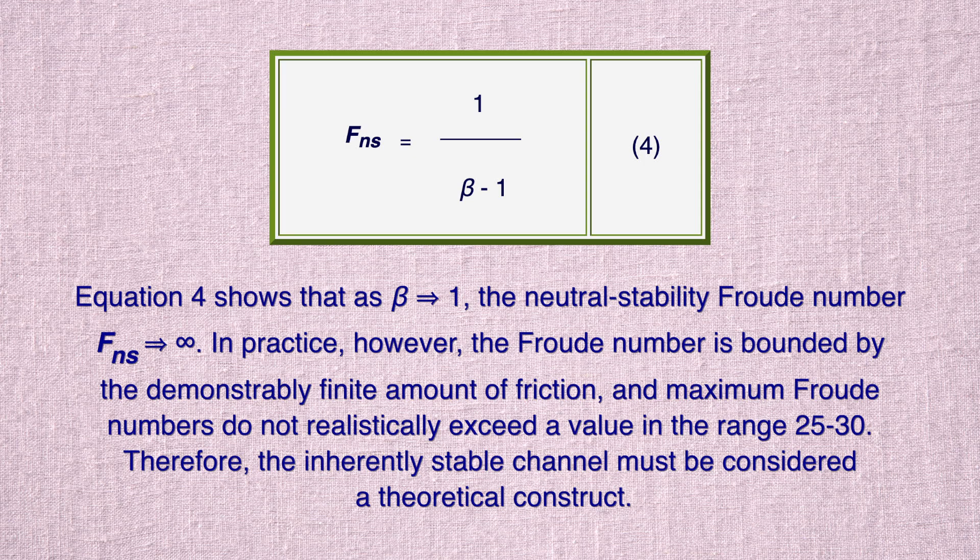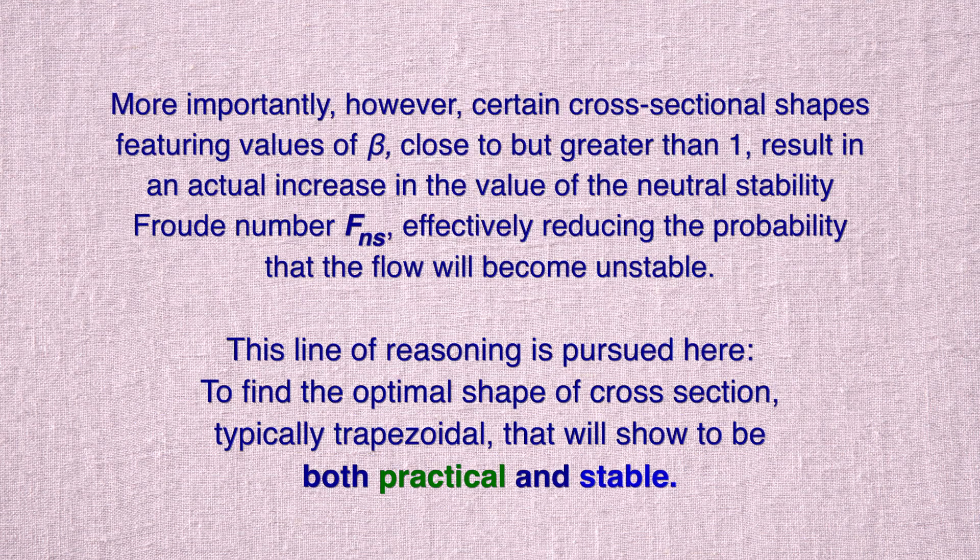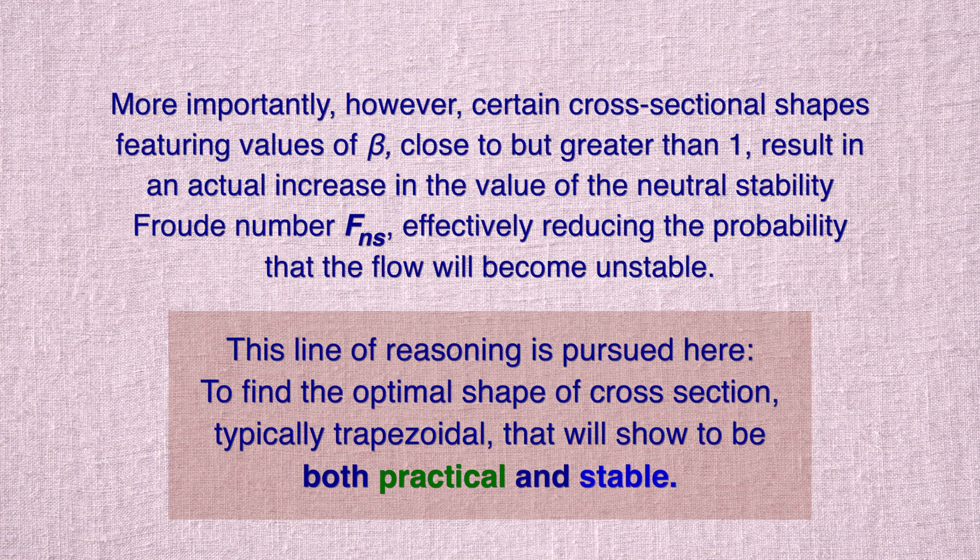Equation 4 shows that as β tends to 1, the neutral stability Froude number F sub ns tends to infinity. In practice, however, the Froude number is bounded by the demonstrably finite amount of friction, and maximum Froude numbers do not realistically exceed a value in the range 25 to 30. Therefore, the inherently stable channel must be considered a theoretical construct. More importantly, certain cross-sectional shapes featuring values of β close to but greater than 1 result in an actual increase in the value of the neutral stability Froude number F sub ns, effectively reducing the probability that the flow will become unstable. This line of reasoning is pursued here to find the optimal shape of cross-section, typically trapezoidal, that will prove to be both practical and stable.